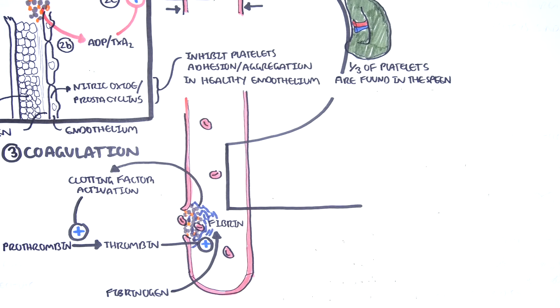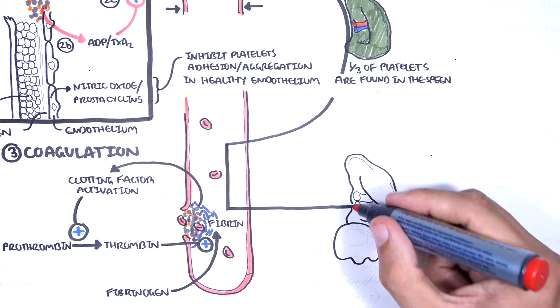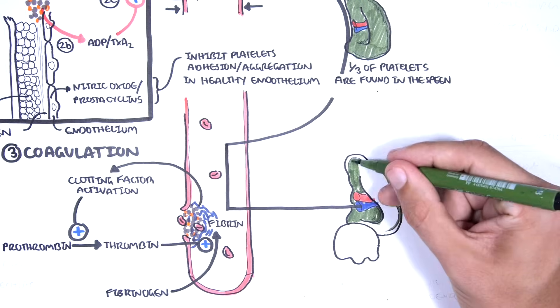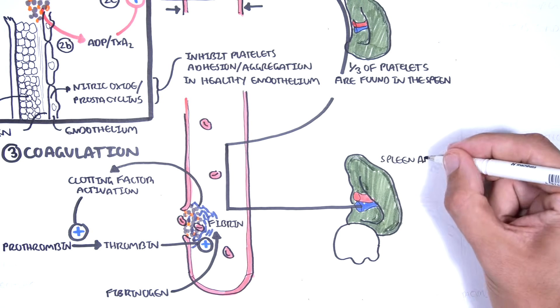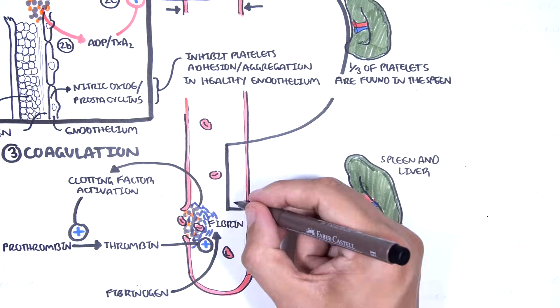Platelets actually live for about 7 days before being cleared up by the body. When platelets age or become damaged, their morphology changes. For example, they become desialylated and need to be cleared up by the body.